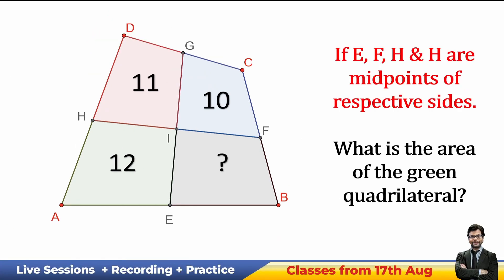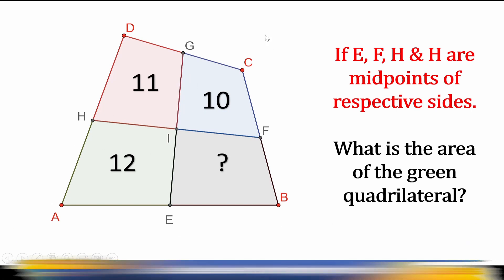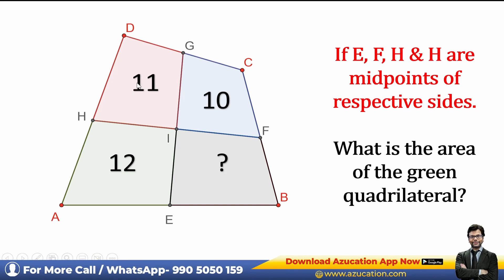Question in front of you where the data is given: E, F, G, H are the midpoints of quadrilateral ABCD. The areas are 11, 10, 12. Then what is the area of the black region?